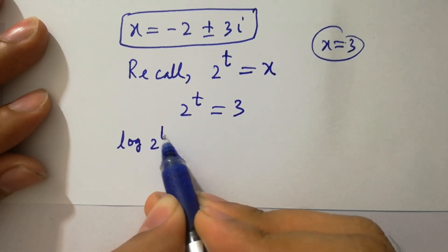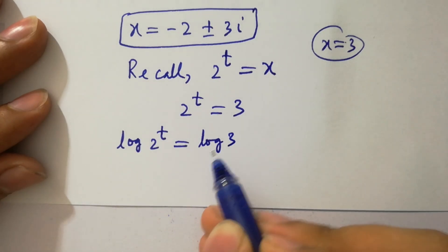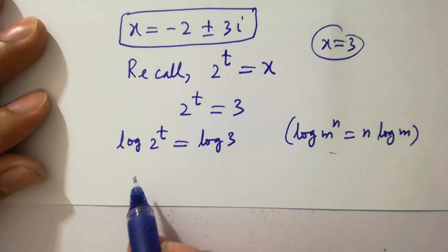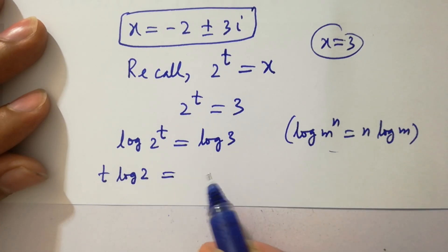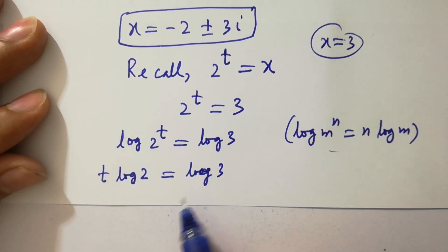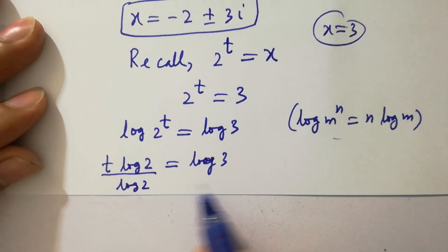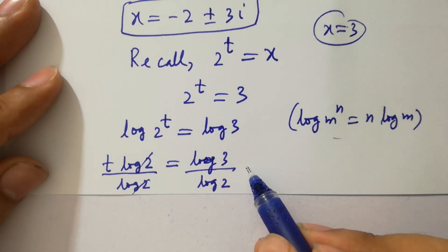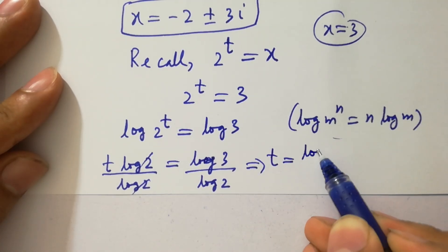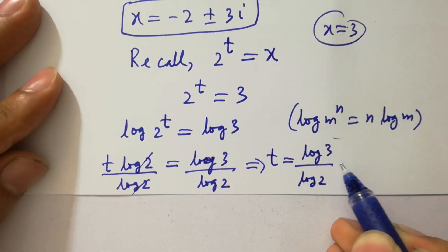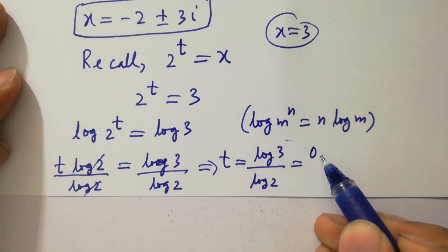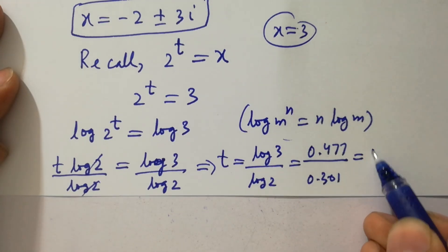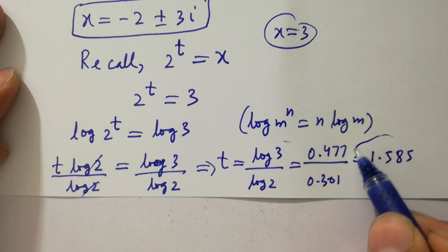Log 2 to the power t equals log 3. Since log m to the power t equals t times log m, we get t log 2 equals log 3. Dividing both sides by log 2, and log 2 cancels, we get t equal to log 3 over log 2, where log 3 is 0.477 and log 2 is 0.301. By dividing we get t approximately equal to 1.585.